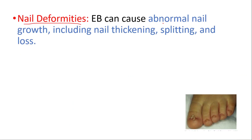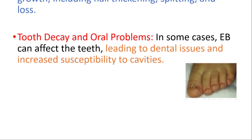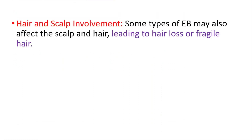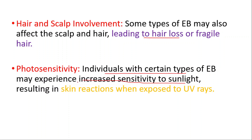Nail deformities can be seen — it can cause abnormal nail growth including nail thickening, splitting, and loss. Tooth decay and oral problems can also occur; in some cases it can affect the teeth leading to dental issues and increased susceptibility to cavities. Some types may also affect the scalp and hair, leading to hair loss and fragile hair.